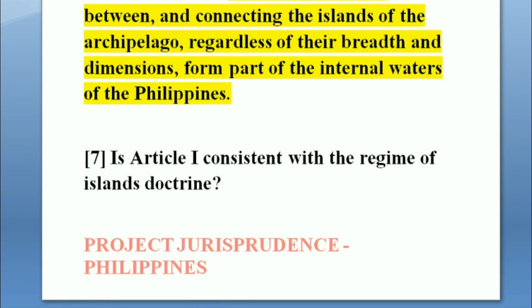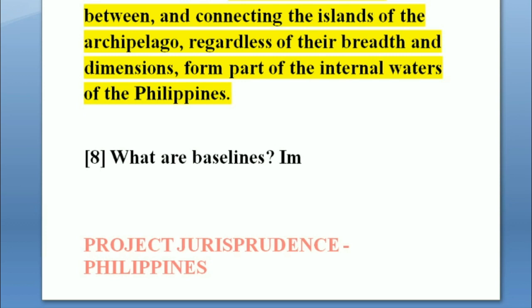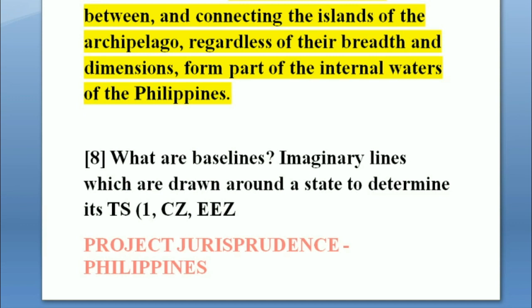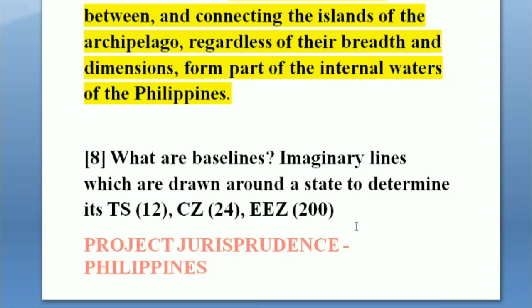Question number eight: what are baselines? Baselines are imaginary lines which we draw around a country in order to measure its territorial sea, contiguous zone, and EEZ. The baseline's central role is that it is the basis for determining the maritime zones of a particular state. Twelve nautical miles from the baseline is the territorial sea; 24 nautical miles from the baseline is the contiguous zone; and 200 nautical miles from the baseline is the exclusive economic zone.